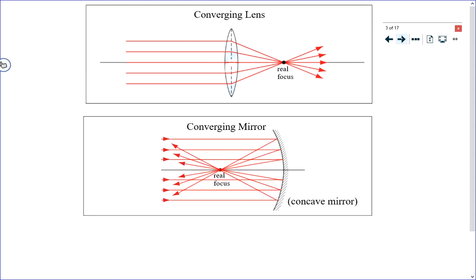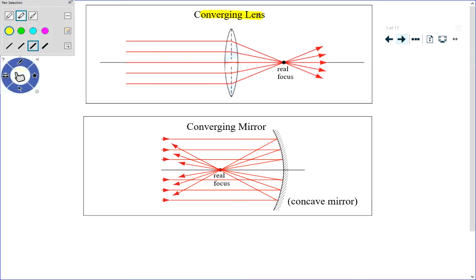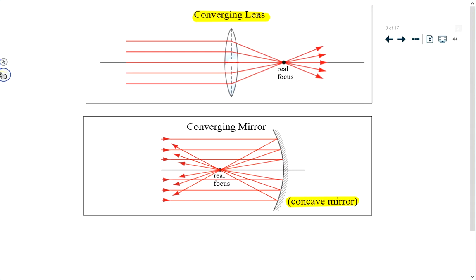I'm going to do a comparison between converging lenses and concave mirrors. From now on, even though your textbook uses the word concave for a mirror, I would prefer that you think of a concave mirror as a converging mirror. A converging lens takes light and uses refraction to focus parallel beams of light. A converging mirror takes parallel beams of light and uses reflection to focus those beams to an actual point. Because both devices bring light to a particular point, that point is called a real focus or real focal point.